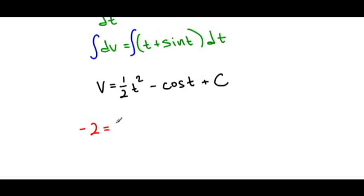Here we have -2 = this cancels out. Cosine of zero is positive one, but we've got a negative in front, so that's -1 + c. And, of course, this means that c = -1.